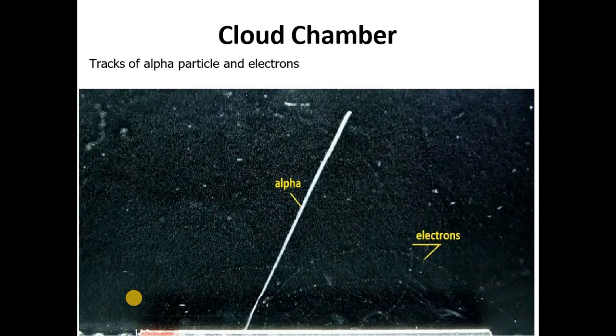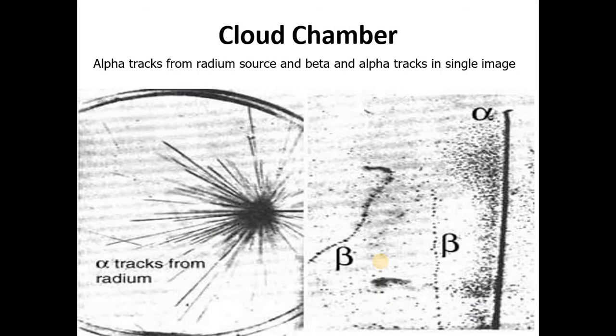Now you can see the tracks of alpha particles and electrons. The track of alpha particles is more prominent. You can also see the track of electrons in the picture. Now alpha tracks from radium source. Then we have a radium source and beta and alpha tracks in a single image. From radium source we have beta tracks and alpha tracks. You can see both tracks in a single image.